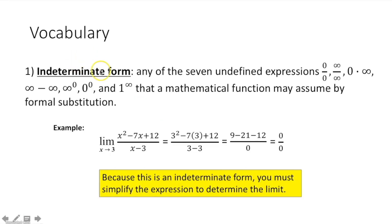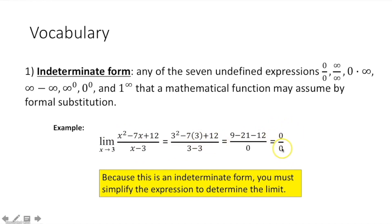The first vocabulary term is indeterminate form. That's any of the seven undefined expressions: zero over zero, infinity over infinity, zero times infinity, infinity minus infinity, infinity to the zero power, zero to the zero power, and one to infinity that a mathematical function may assume by formal substitution. So if you're given a limit and you substitute — say you're substituting three in for x — and you get zero over zero, this would be called an indeterminate form.